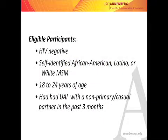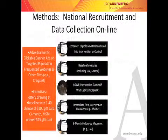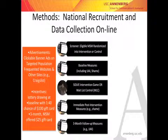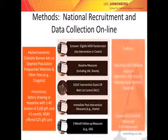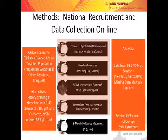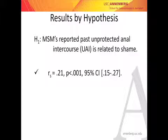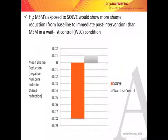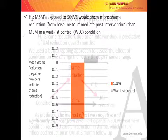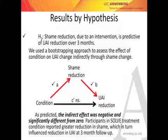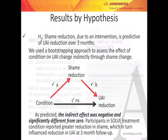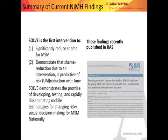Eligible participants were HIV negative, self-identified MSM aged 18 to 24 who had unprotected anal intercourse (UAI) with a non-primary partner in the last three months. We conducted online data collection with advertisements through various means, followed by a screener, baseline measures, either the SOLVE interactive game or a waitlist control group, then immediate post-intervention and three-month follow-up measures. We had 921 men from around the country with about 69% retention at three months. We found that men's reported UAI is related to shame, and that MSM exposed to SOLVE showed more shame reduction from baseline to post than the waitlist control. Shame reduction due to the intervention was predictive of UAI reduction over three months — demonstrating, I believe for the first time, that shame reduction due to an intervention predicts risk reduction over time. This has recently been published in JIS.